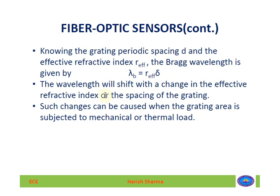Next is fiber optic sensors. A fiber optic sensor has a plastic or glass fiber core with a cladding — a center core surrounded by an outer cladding. It may be used to sense any quantity that changes the intensity, wavelength, polarization, phase, or transit time of light passing through it.